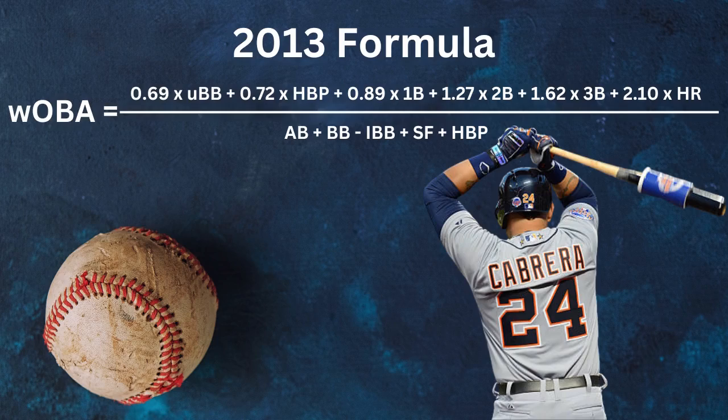Taking a look at this 2013 version of the calculation of WOBA, we see that it's 0.69 times the number of unintentional walks, plus 0.72 times hit-by-pitch, 0.89 times singles, 1.27 times doubles, 1.62 times triples, and 2.10 times home runs. You take the total of all that divided by at-bats plus walks minus intentional walks plus sacrifice flies plus hit-by-pitches.